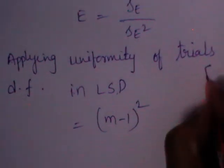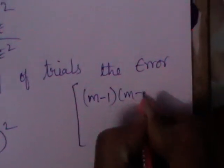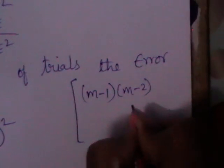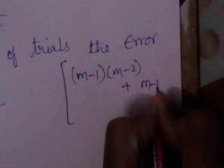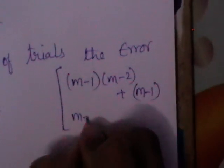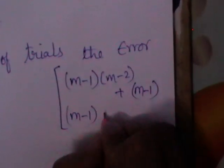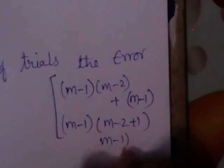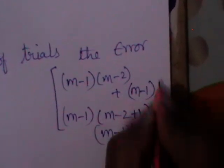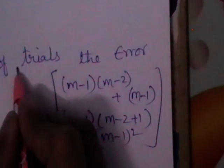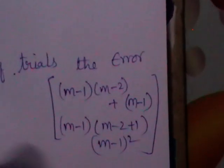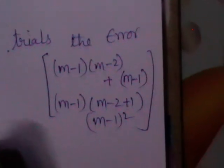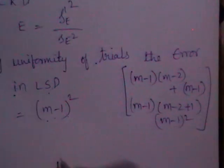Originally, the degrees of freedom in LSD are M minus 1 into M minus 2. Adding another factor for treatment and simplifying, we get M minus 1 into (M minus 2 plus 1), which equals M minus 1 whole squared. So the error degrees of freedom in LSD is (M-1)².